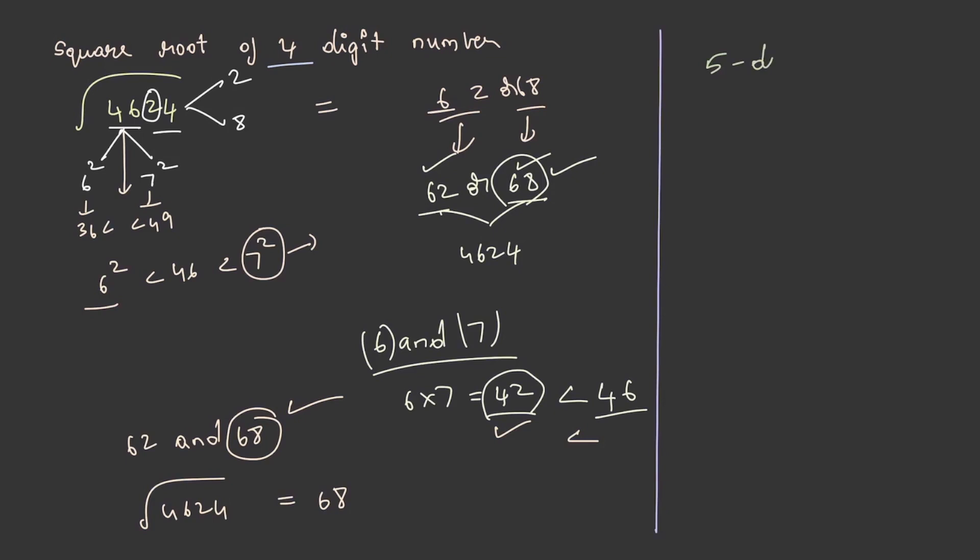What if square root of a 5-digit number is to be found out? For suppose, let us take a number as 16641. 1 is in the units place for squares of 1 and 9. Let us neglect 4. 166 lies in between 12² and 13² respectively. So, 12² is less than 166 is less than 13², isn't it?